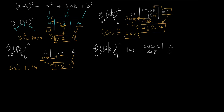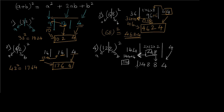From the last part we take the last digit: 4. From the center part we take the rightmost digit: 8, and transfer the 4 to add to the left term. So 144 + 4 = 148, and we write this entirely to get the final answer. So 122² = 14884.